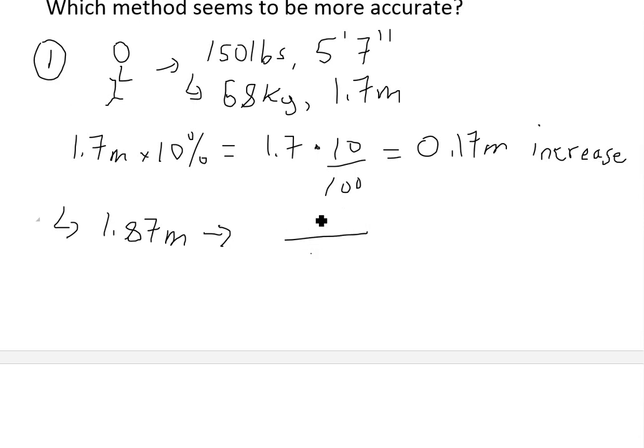So it would be 68 kilograms is 1.7 divided by 1.7 meters using direct proportion.